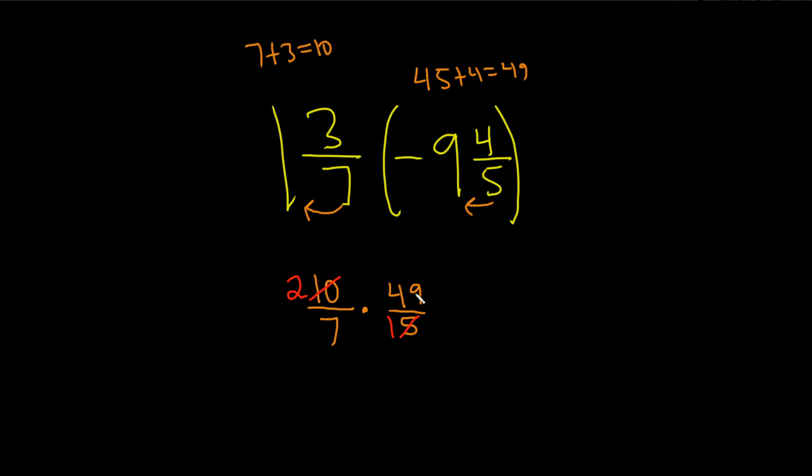The 7 and 49 can also be reduced. 7 goes into 7 one time, so you put a line through it, put a 1 here. 7 goes into 49 seven times. Put a line through it, and I'll put the 7 over here.